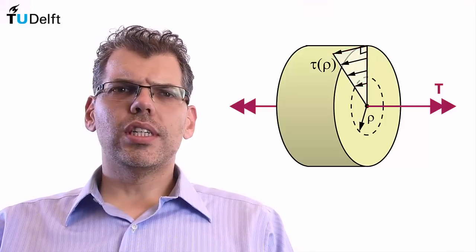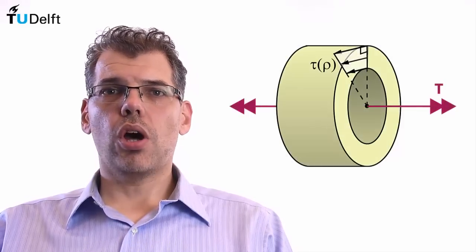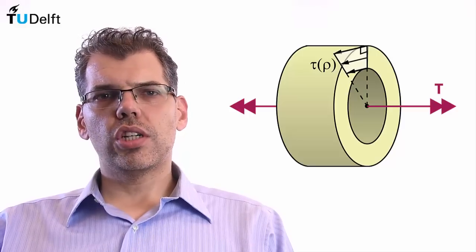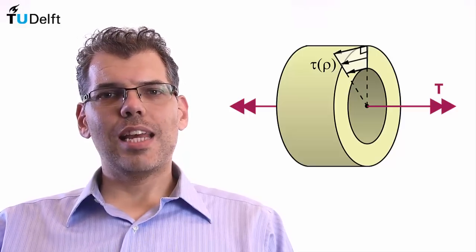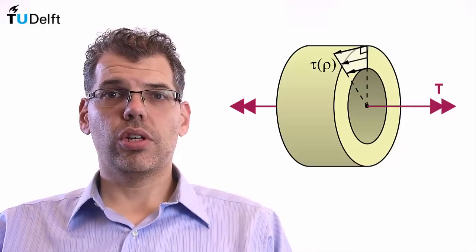So for weight efficiency it is better to eliminate this lazy portion of the shaft and use a hollow cross-section. We already know that for such a hollow cross-section the same linear stress distribution of a solid shaft also applies when the shaft is circular.